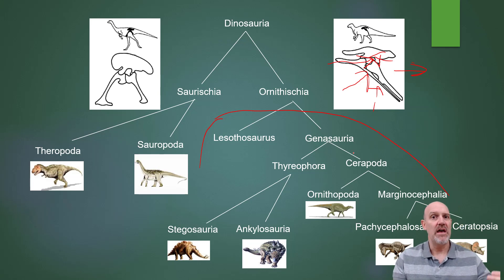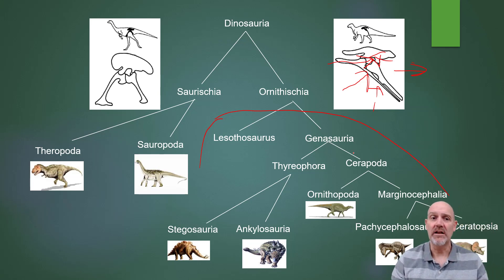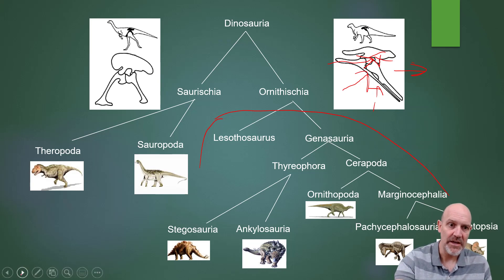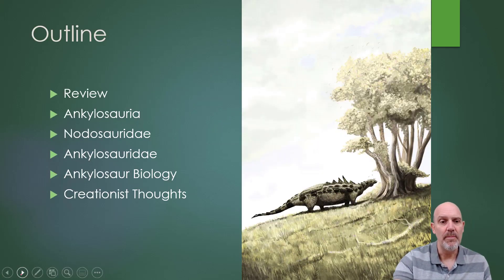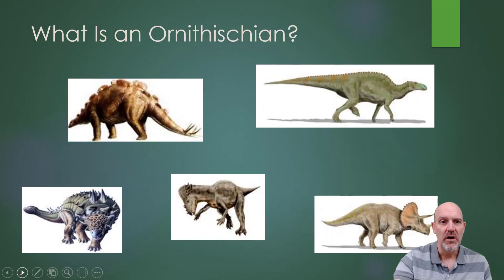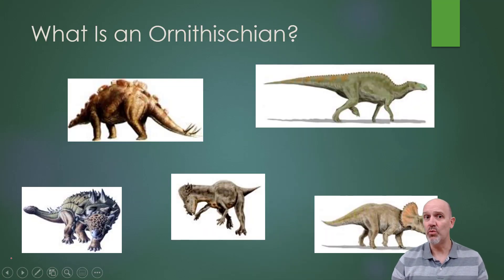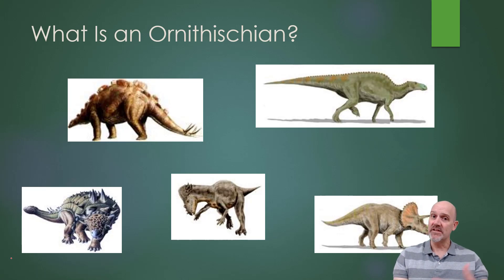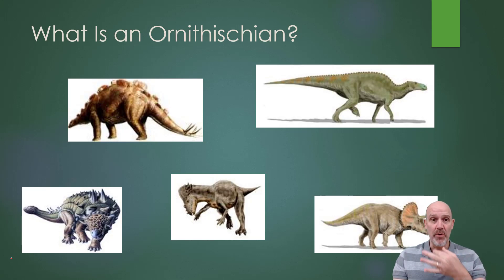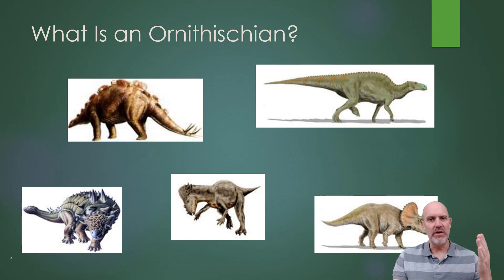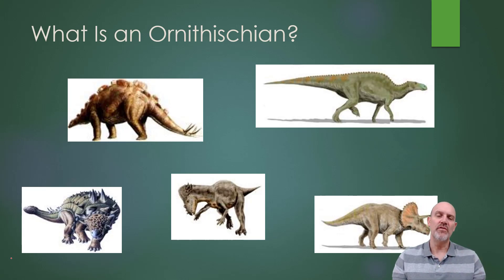We looked at Stegosauria last time, and the synapomorphy for that was the big plates on the back, and we're going to look at Ankylosauria today. So let's have a look. First of all, just to review: what is an ornithischian? An ornithischian has to have the backward-facing pubis bone, and it has to have the predentary bone. There are other features like the palpable bone and the teeth, but those two are probably the major ones.